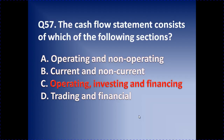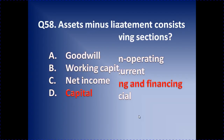Question number 57: The cash flow statement consists of which of the following sections? The options are: operating and non-operating; current and non-current; operating, investing and financing; or trading and financing. Operating, investing and financing is the right answer, because the cash flow — the inflow and outflow of cash and how cash was utilized during the course of business — falls under operating, investing and financing.